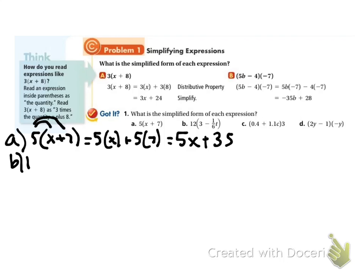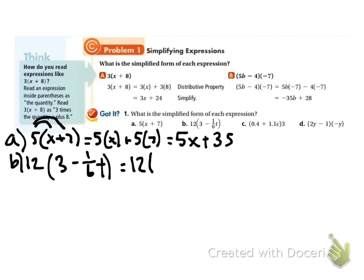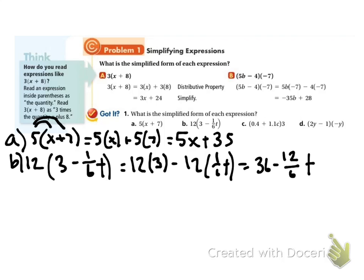Problem b: I've got 12 times (3 minus 1/6 t). So we distribute the 12 to the 3 and to the 1/6 t. I get 12 times 3 minus 12 times 1/6 t, which is equal to 36 minus 12/6 t, which simplifies to 36 minus 2t.